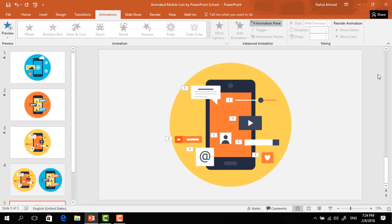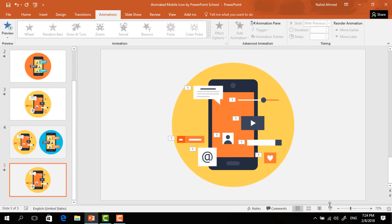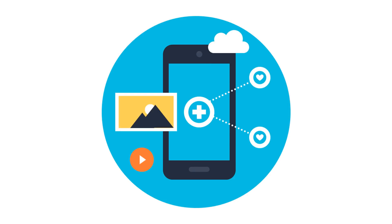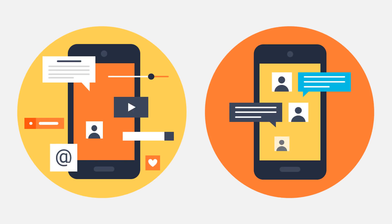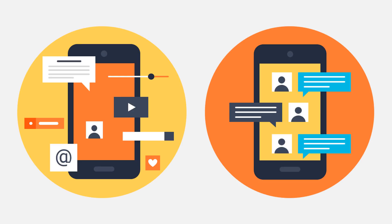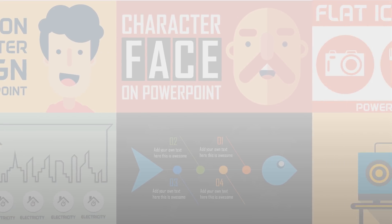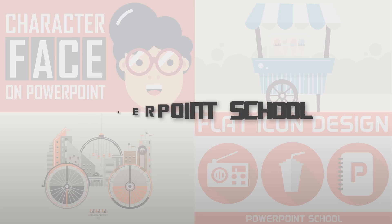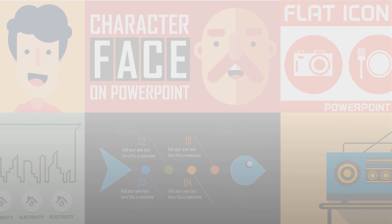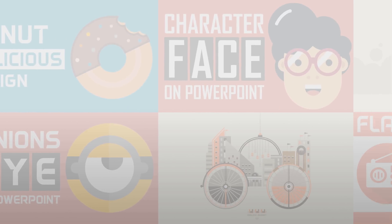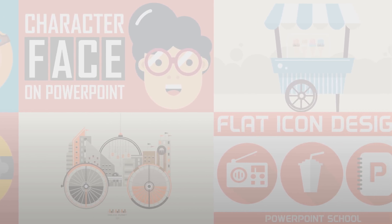And we're done! Now if you start the slideshow, you can see that our whole animation is working perfectly. In this way you can create different icon styles, and you can also download this template for free — the download link is in the video description. If you enjoyed this tutorial, make sure you give it a like, subscribe to our channel, share with your friends, and click the bell icon to get notifications. Hope to see you in the next tutorial, thanks for watching!